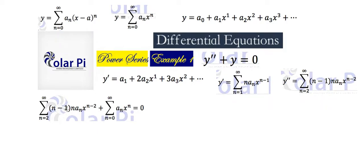We want to simplify this as much as possible to make it equal to zero. At the start, we need to fix the fact that this sigma starts at n equals two, while this sigma starts at n equals zero. The way we fix that is by pushing this forward so that this sigma starts at n equals zero.